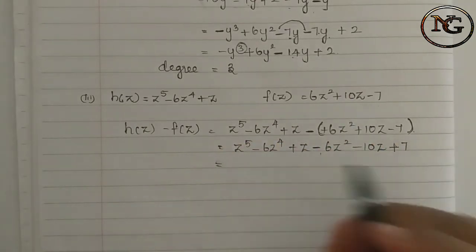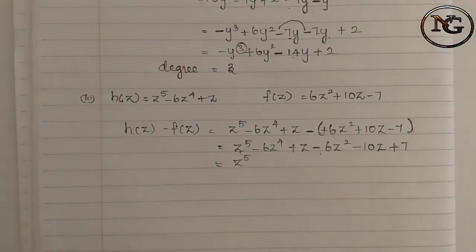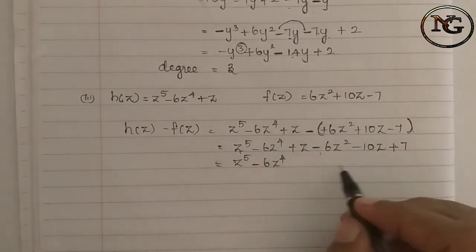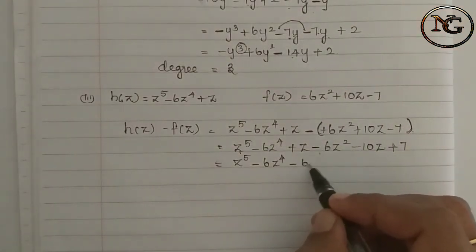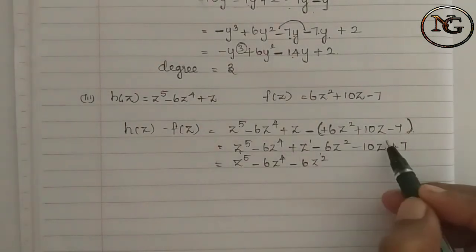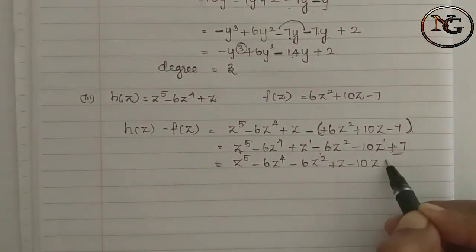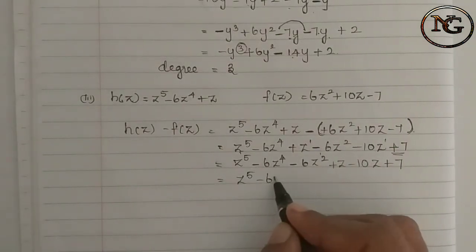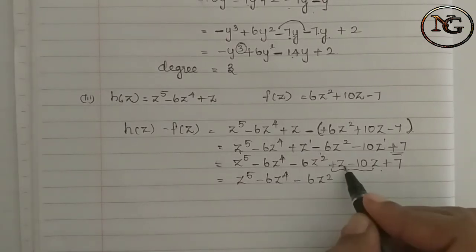Which is equal to z power 5 minus 6z power 4 plus z, minus of f of z which is 6z squared plus 10z minus 7. Opening the bracket: first expression z power 5 minus 6z power 4 plus z, then plus minus gives minus: minus 6z squared minus 10z plus 7.